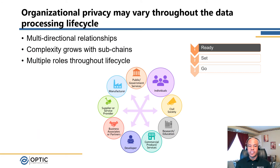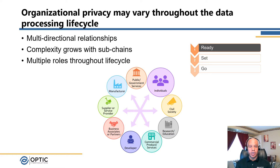Effective Privacy Risk Management really starts with the organization understanding its business objectives, mission objectives, risk tolerance, any legal environments, and really where they sit within the data ecosystem itself — for example, whether they are a data controller or data processor. You really start with the identify and govern functions as part of the core we talked about previously, and review those subcategories and categories to help develop the current and target state profiles.